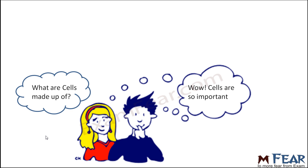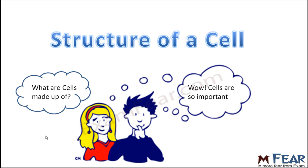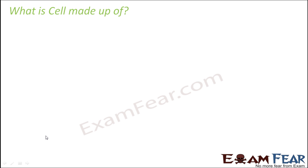Now you might be interested to know what cells are made up of — what is present inside the cell that helps it to perform all these activities. That is what we are going to study now: the structure of a cell, or how exactly the internal structure of a cell looks like. So what is a cell made up of? We will look at the different parts of the cell and then discuss each of those parts in detail one by one.